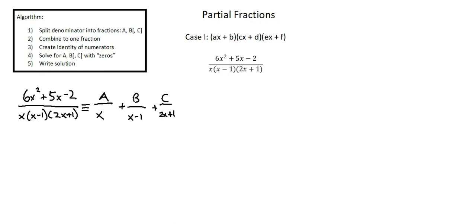Step two is combine to one fraction and we'll use algebra to turn the right side of the identity into one fraction which will be x times quantity x minus 1 times quantity 2x plus 1. As we see in the original expression but the numerator is going to change.